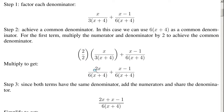So now instead of x over 3(x plus 4), we have 2x over 6(x plus 4). And then the other term stays the same — it's still x minus 1 over 6(x plus 4).